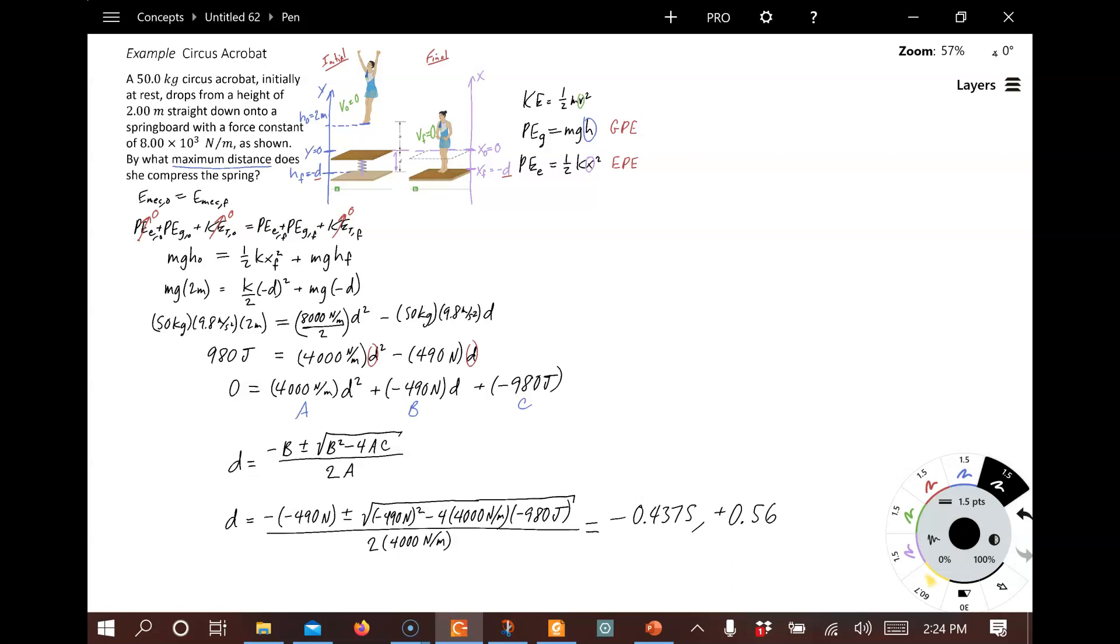Now, based on the picture, we know that D was a positive number the way we defined it. So it can't be this answer. And it's got to be this one. So at the end of the day, and that's meters here, D is equal to 0.56 meters.